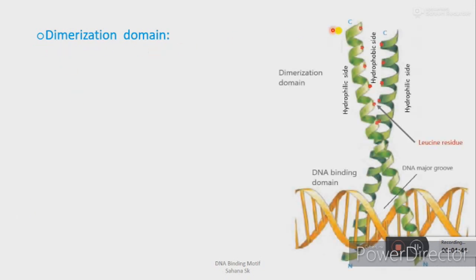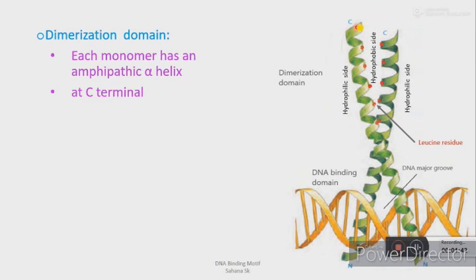What are the features of the dimerization domain? As you can see, at the C terminal each monomer has an alpha helix. These alpha helices are amphipathic in nature. Amphipathic alpha helices are alpha helices containing both hydrophilic and hydrophobic amino acids. Hydrophilic means water loving and hydrophobic means water hating. In the hydrophobic side of the amphipathic alpha helix, leucine residues occur at every seventh position, which is represented as a red dot in this diagram.